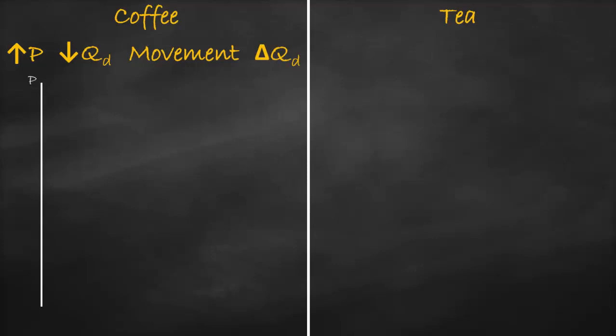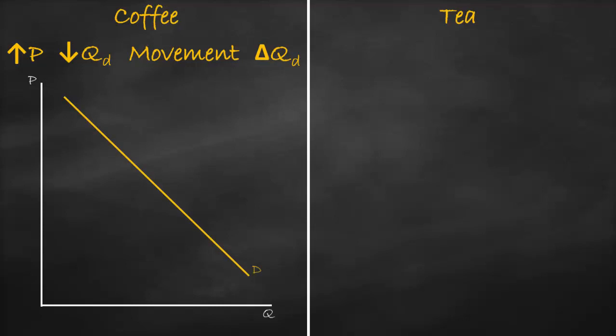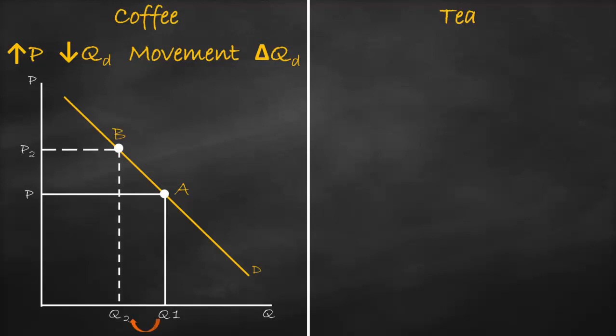Let's draw the coffee movement example. On the y-axis we have price, x-axis is quantity, and we have a downward-sloping demand curve. At an initial price we get Q1 at point A. With a higher price P2, we intersect the demand curve at point B, giving us a lower quantity. We moved from point A to point B on the same demand curve — that's why we call it a movement.